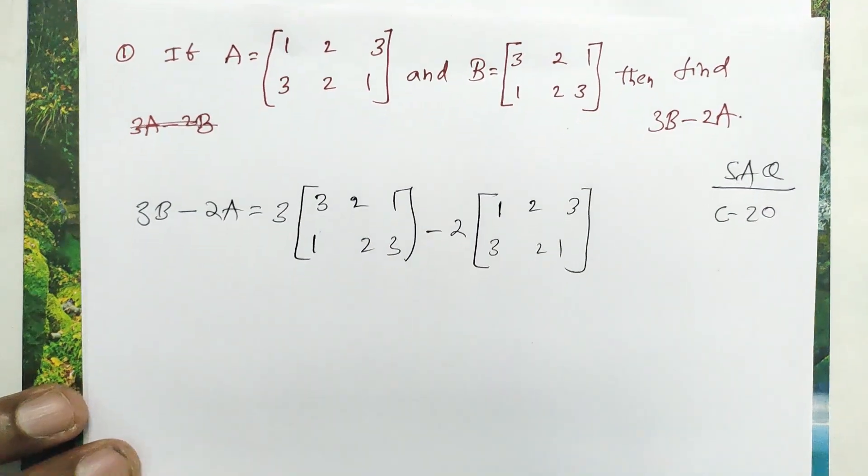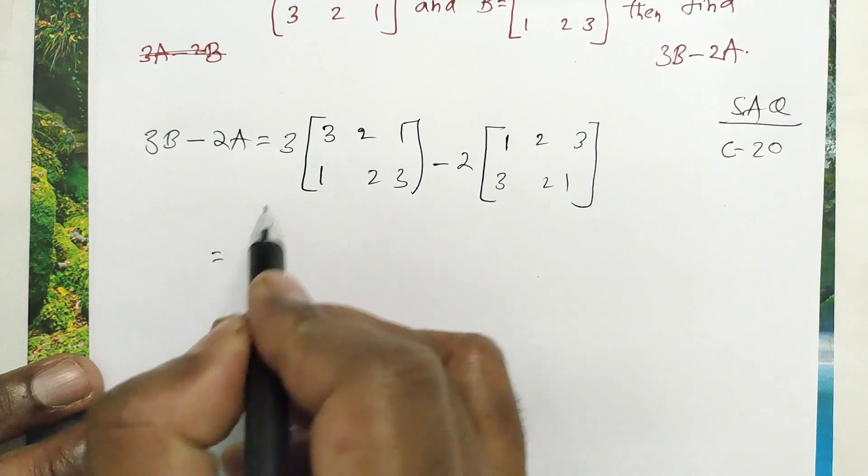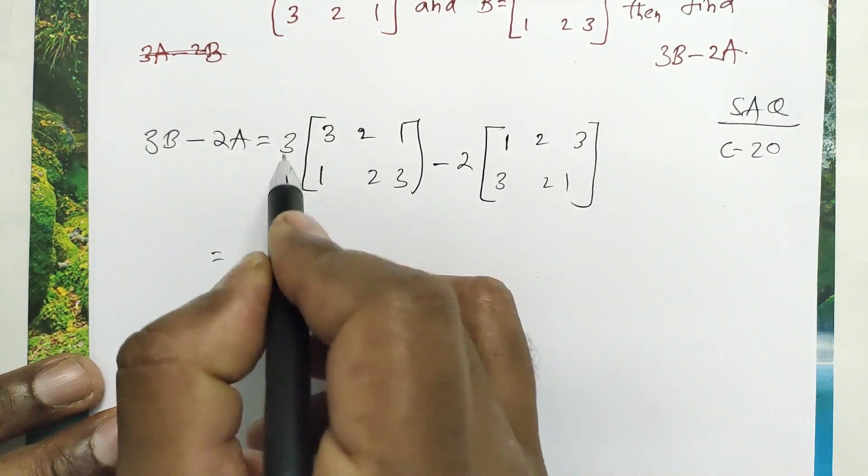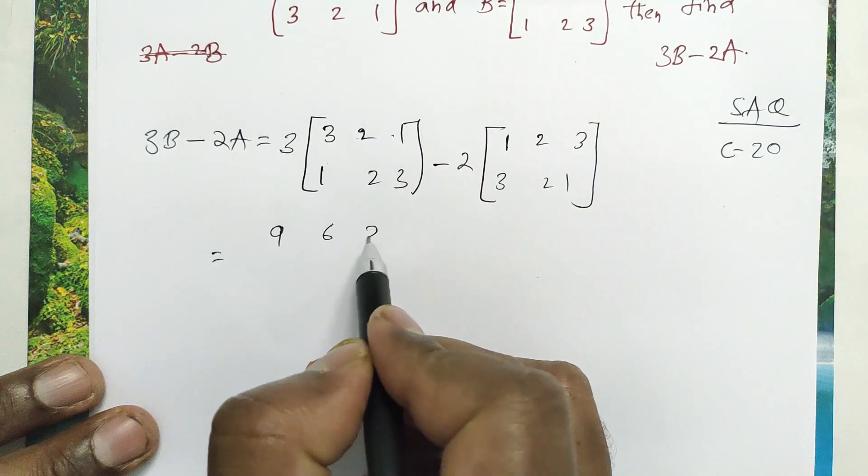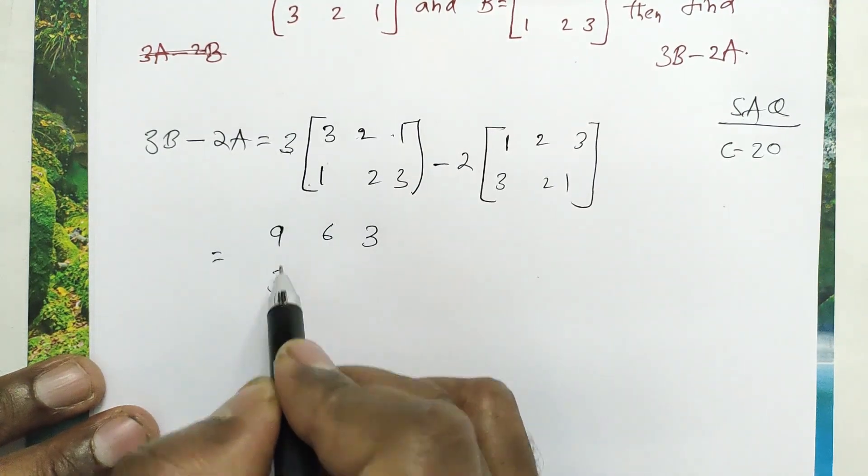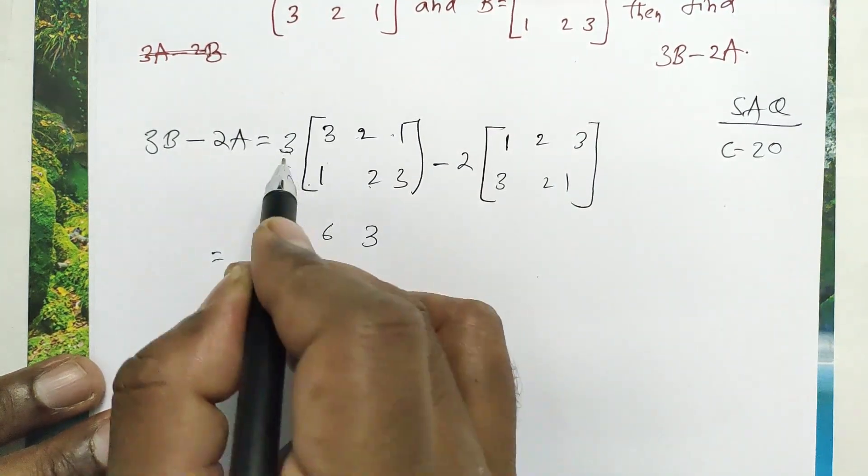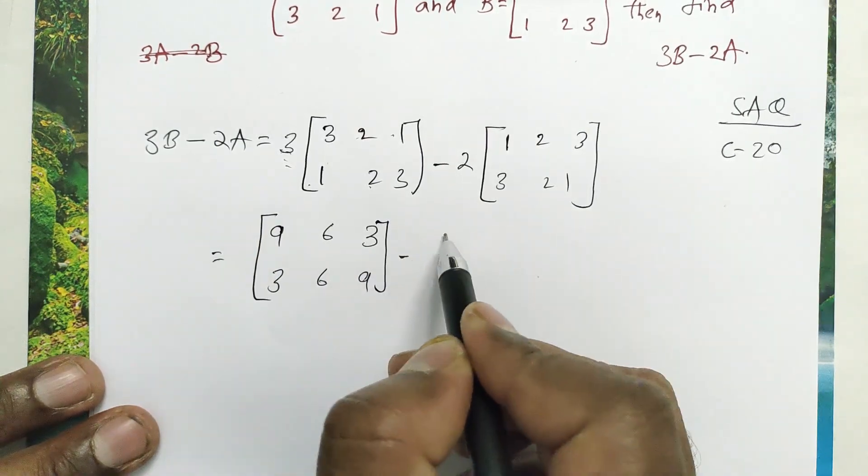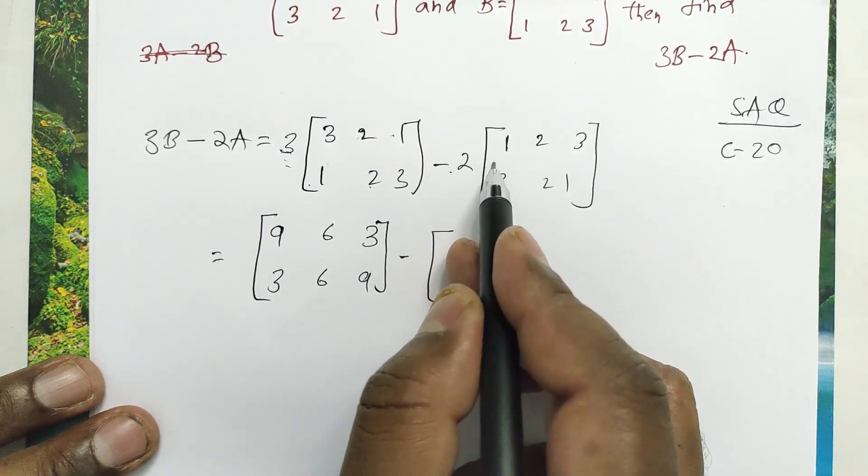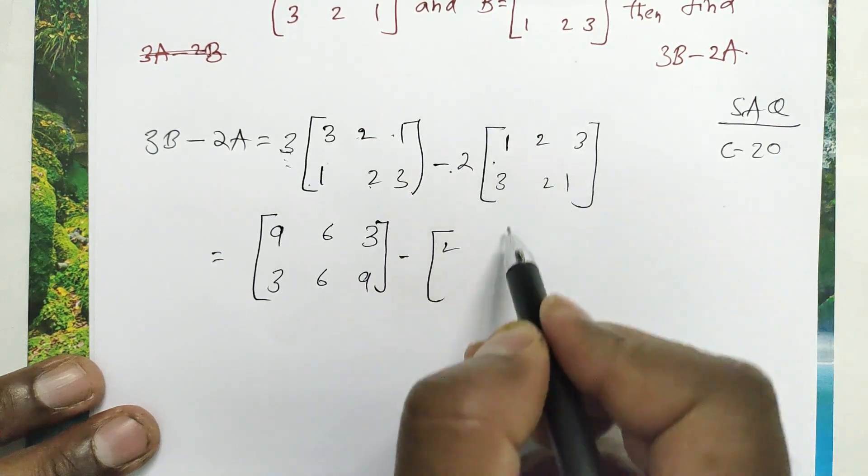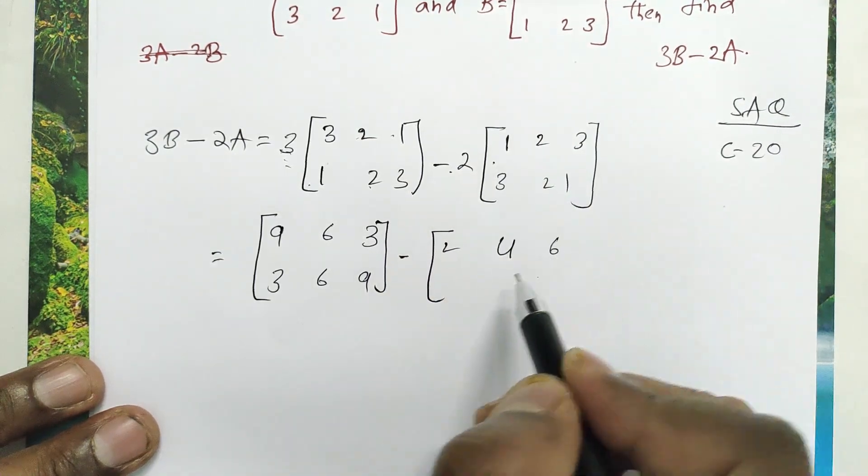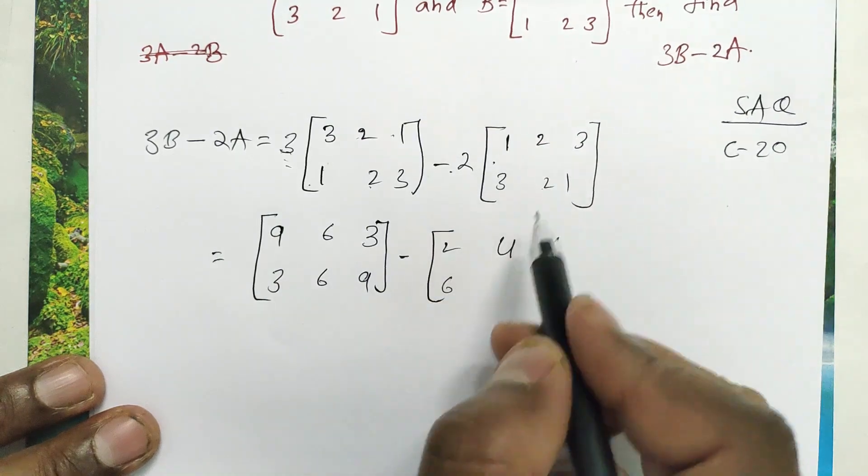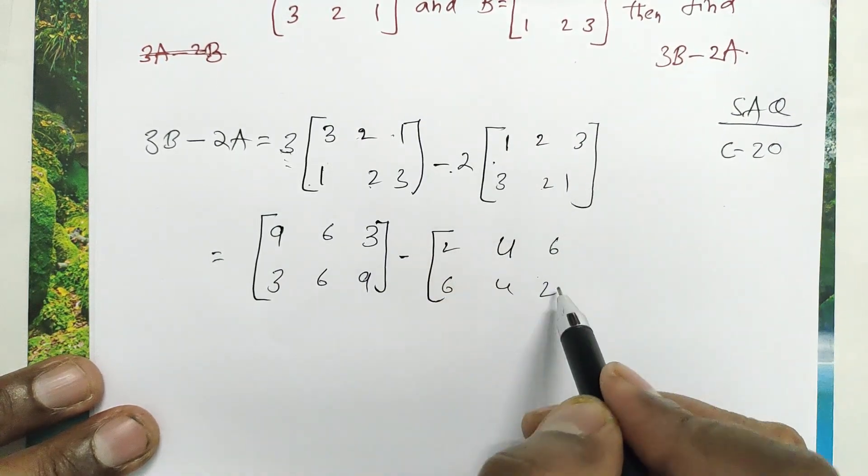Now that equal to 3 times 3 is 9, 3 times 2 is 6, 3 into 1 is 3, 3 into 1 is 3, 3 times 2 is 6, 3 times 3 is 9. Minus 2 into 1 is 2, 2 times 2 is 4, 2 times 3 is 6, 2 times 3 is 6, 2 times 2 is 4, 2 into 1 is 2.